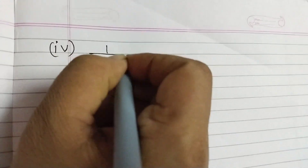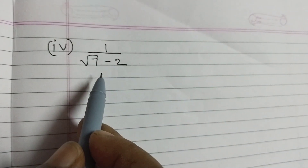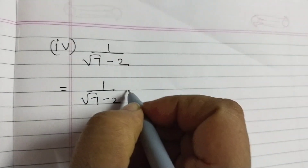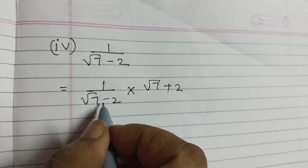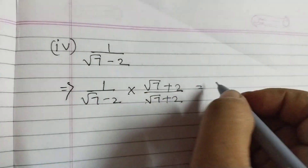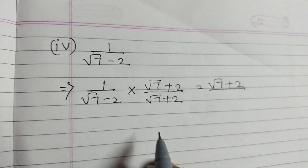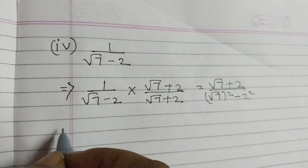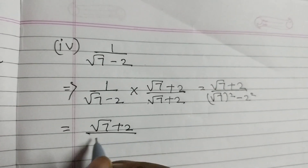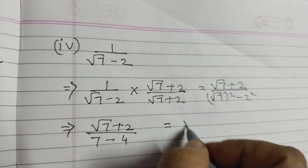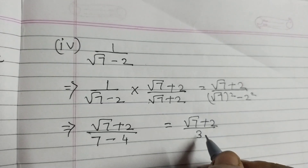Question number 4: 1 over root 7 minus 2. Here we have a root sign on one term and a plain integer on the other, but we use the same method — multiply by the conjugate with the sign changed. So 1 over (root 7 minus 2) multiplied by (root 7 plus 2) over (root 7 plus 2). The numerator is root 7 plus 2. In the denominator, root 7 squared minus 2 squared equals 7 minus 4 equals 3. So the answer is (root 7 plus 2) divided by 3.